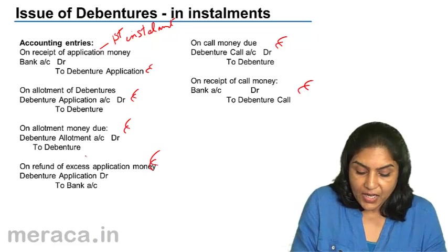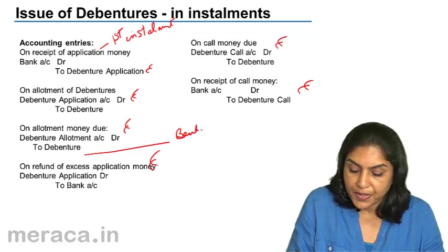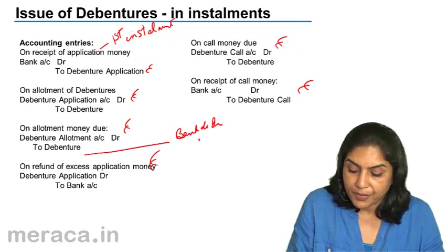Similarly, on receipt of money for allotment, there should be an entry bank account debit to debenture allotment.